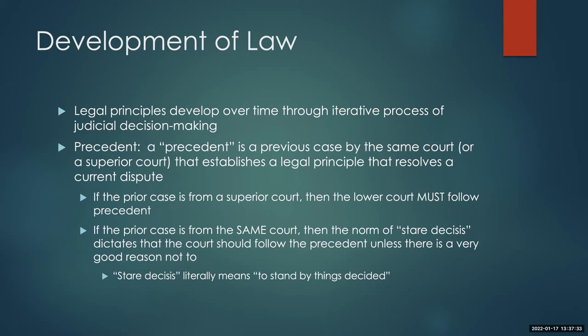If a precedent comes from a superior court — a higher court — then the lower court has to follow it. For example, when the Fifth Circuit Court of Appeals hears an abortion decision and they see a Supreme Court decision that tells them how to decide it, they have no choice. Even if they think the Supreme Court was wrong in that last decision, they have to apply precedents from higher courts because they are higher courts.